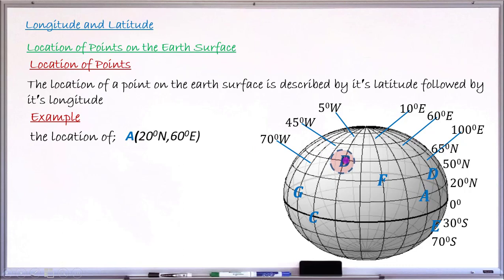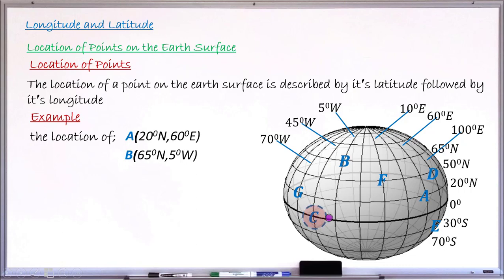Moving to point B: its latitude is 65 degrees north and its longitude is 5 degrees west. So the location of point B is 65 degrees North, 5 degrees West. Next, point C: its latitude is 0 degrees and its longitude is 45 degrees west. So the location of point C is 0 degrees, 45 degrees West.